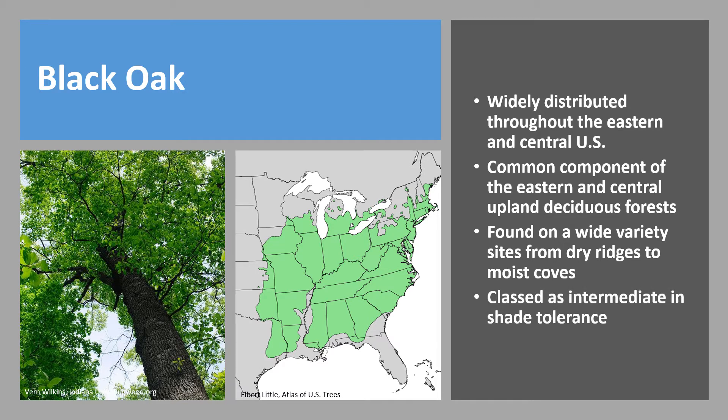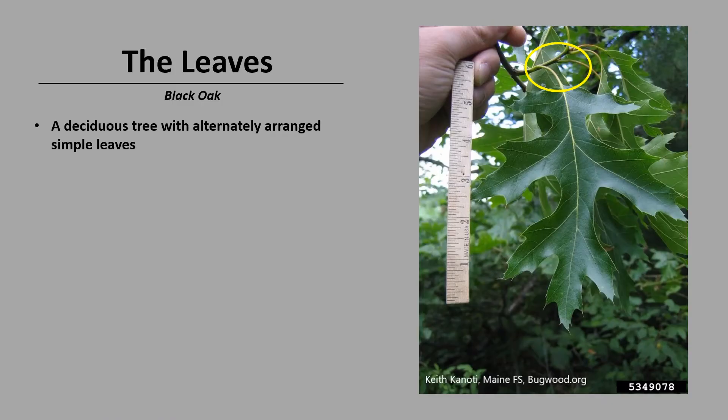Black oak is classed as intermediate in shade tolerance. It is less tolerant than white and chestnut oak, and about the same as northern and scarlet oak.